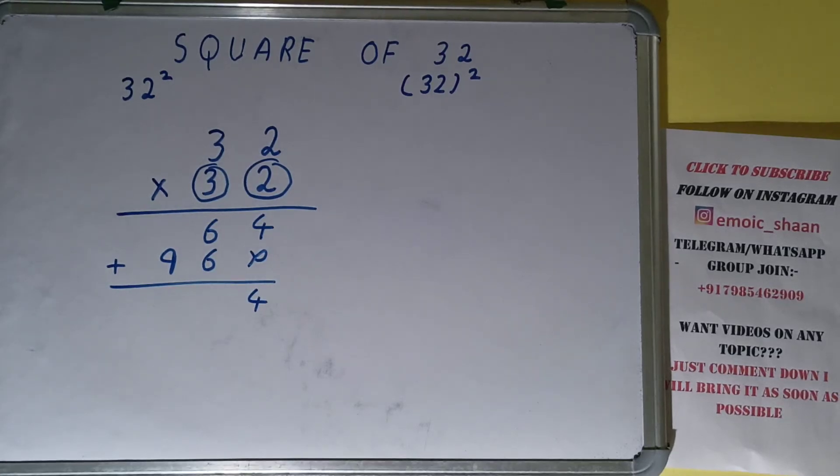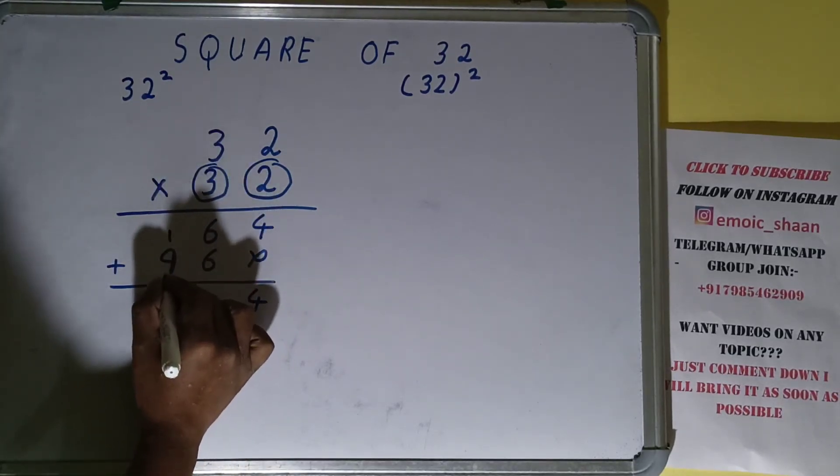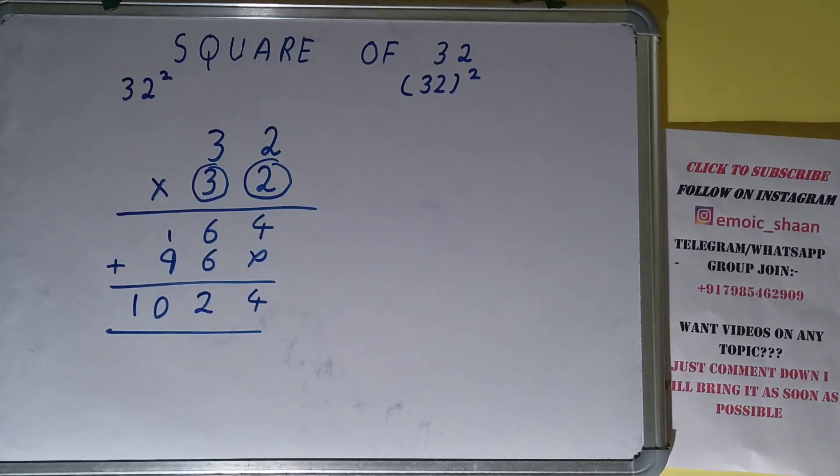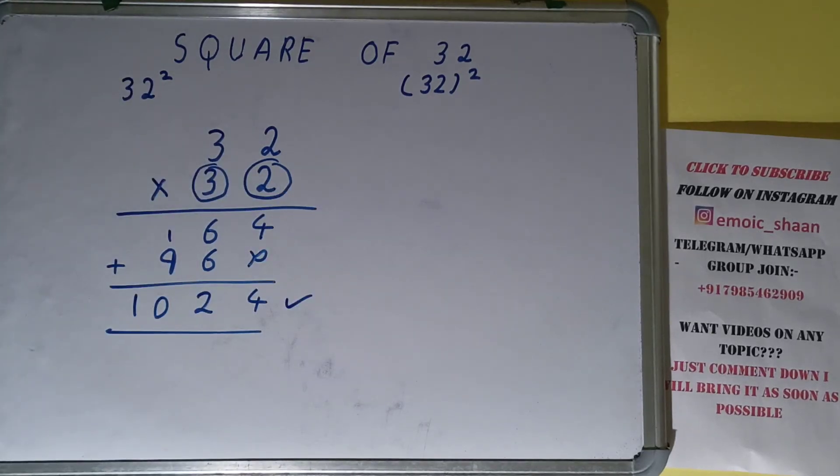This will be 6 plus 6 is 12 - 2 here and 1 in carry. 1 plus 9 is 10. So the answer will be 1024. We can say that the square of the number 32 is 1024.